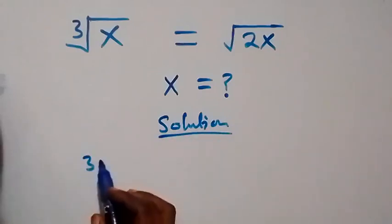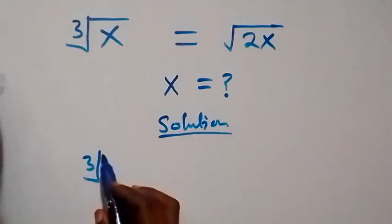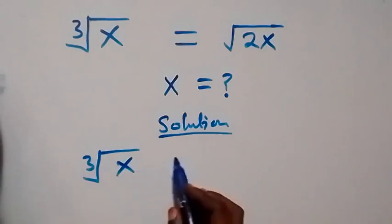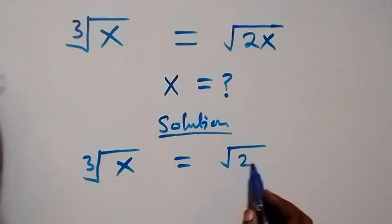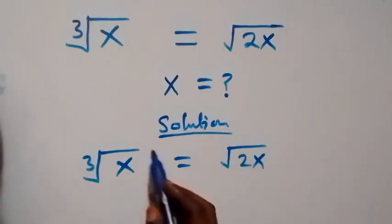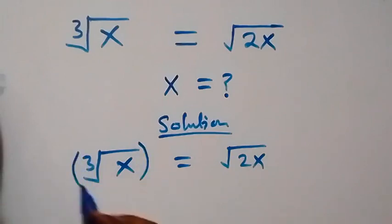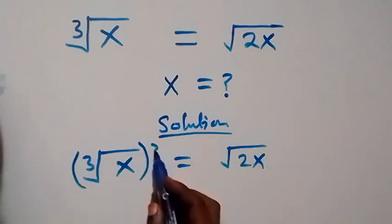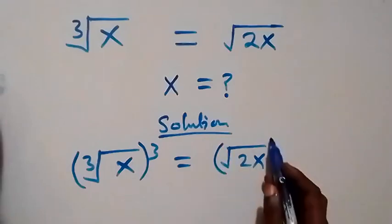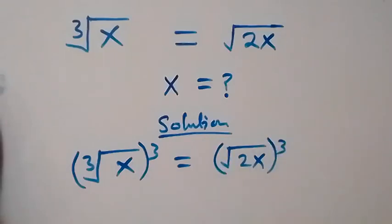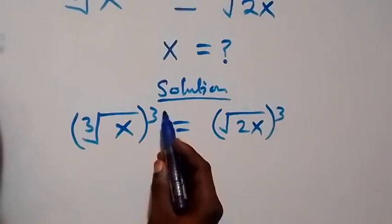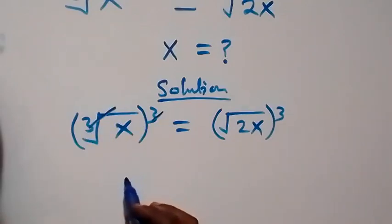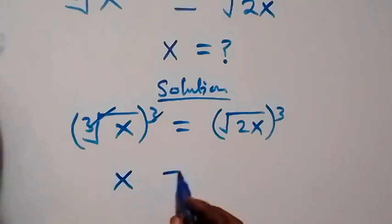The cube root of x equals the square root of 2x. From here, let's take the cube on both sides — that is, raise both sides to power 3. This power 3 cancels the cube root, and we are left with x on the left side.